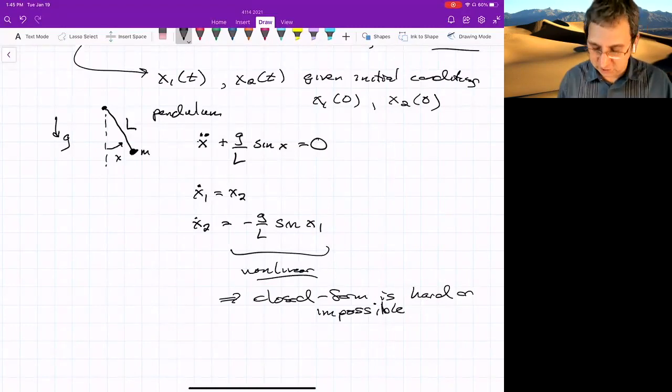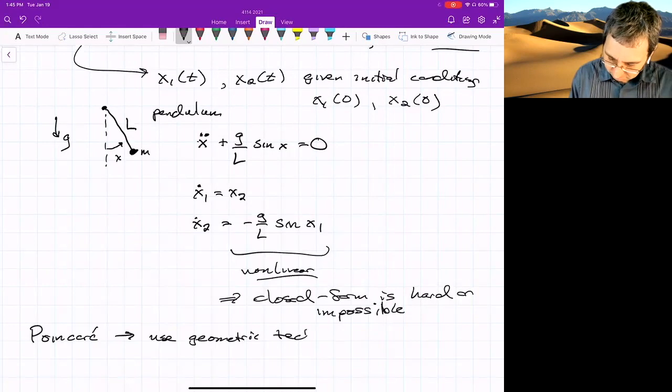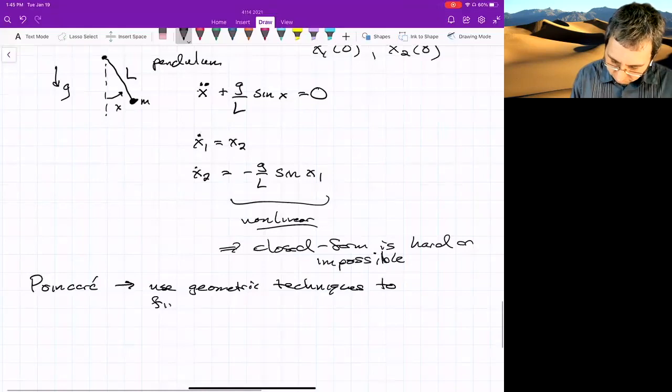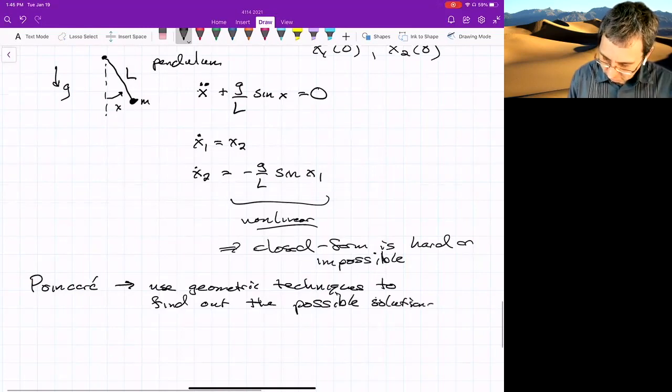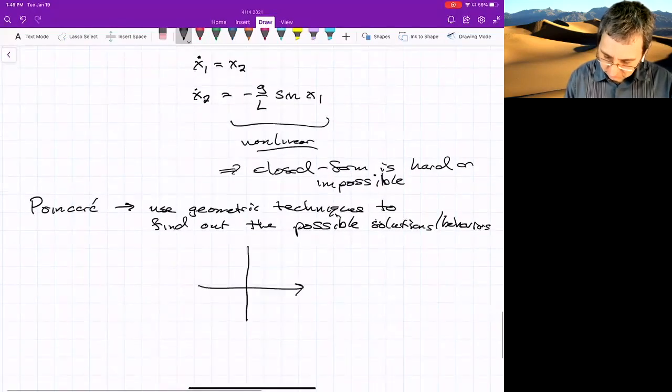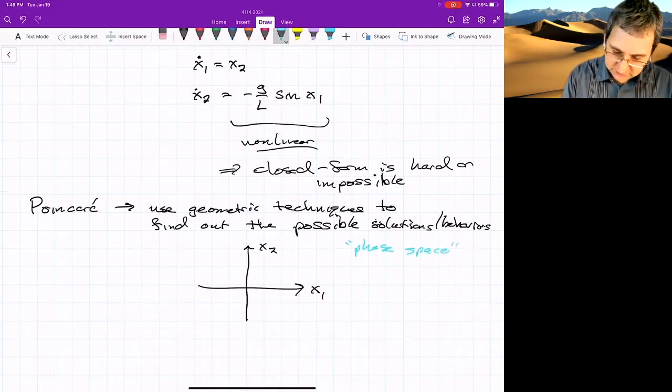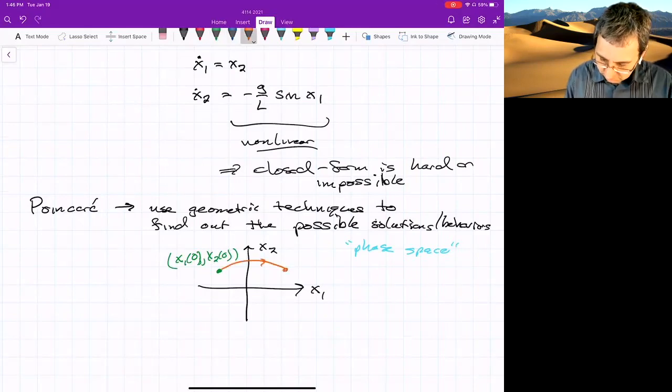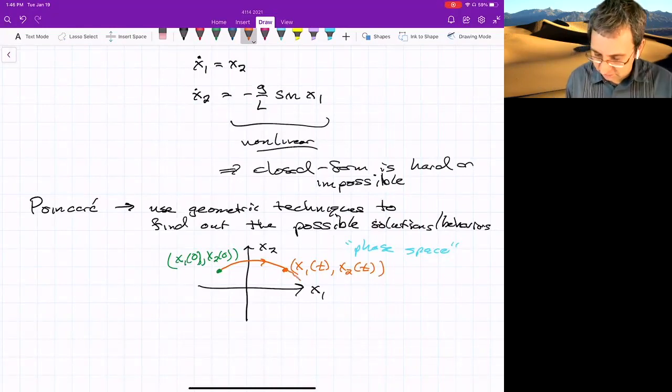So instead of trying to solve for something in closed form solution, what Poincaré suggested, and this is where we'll end, we would try to use geometric techniques to find out the possible solutions behaviors. So that's, this is taking this view that, okay, look at the space that we call the phase space of the variables. And starting with some initial condition, can we determine where this initial condition evolves to after some time, or at least even put constraints on that. So that's the geometric view that Poincaré ushered in, and we'll kind of continue that next time. Thank you.